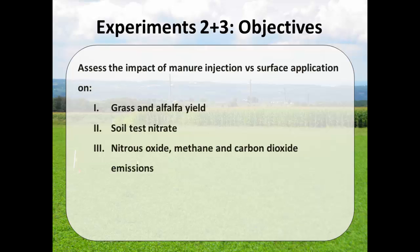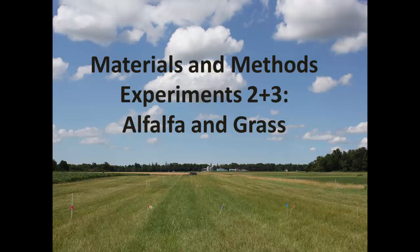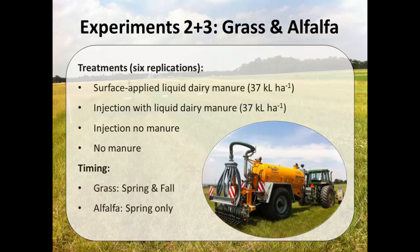We had four treatments and six replications. The treatments were: surface-applied liquid dairy manure at 37 kiloliters per hectare (equivalent to 4,000 gallons per acre); injection with liquid dairy manure at the same rate; injection without manure; and no-manure control. The injection-without-manure treatment is to assess the mechanical impact of injection without manure to determine if yield loss occurs from injection alone — that injection unit came from ARS in Pennsylvania. We applied manure in grass in both spring and fall, and in alfalfa only in spring.